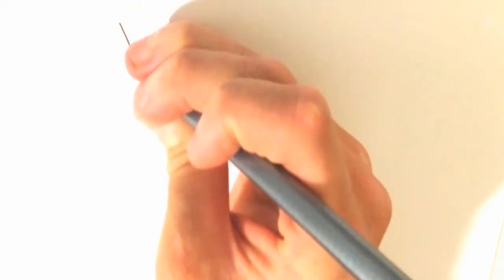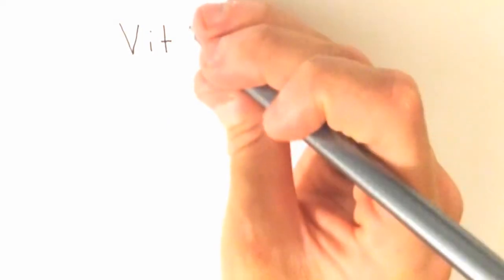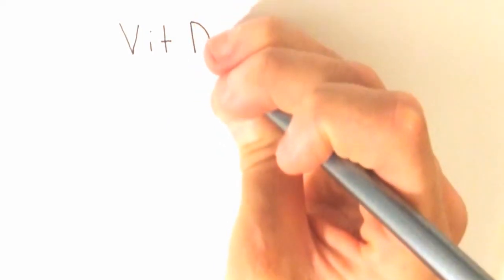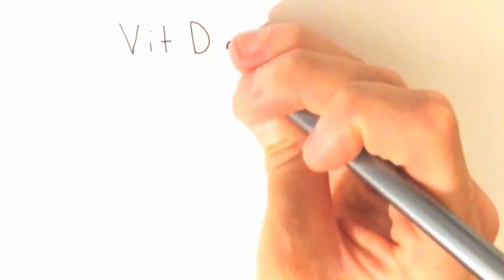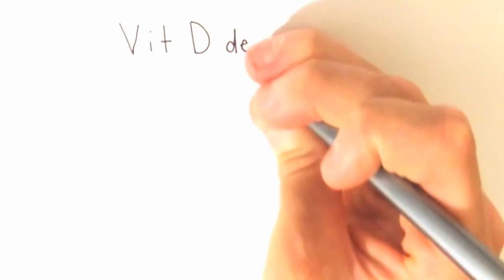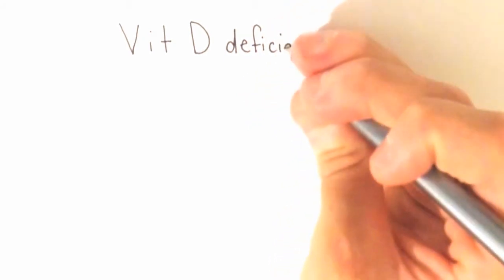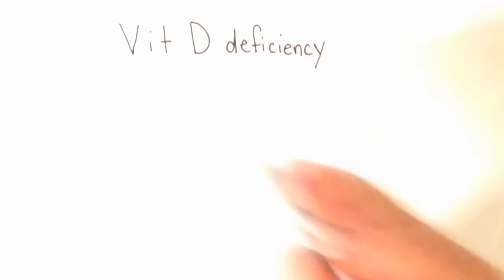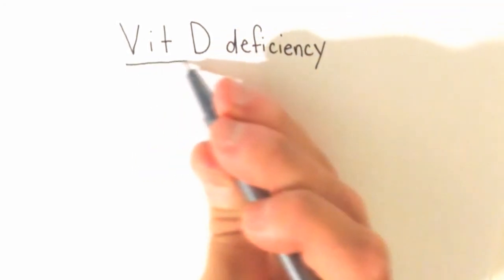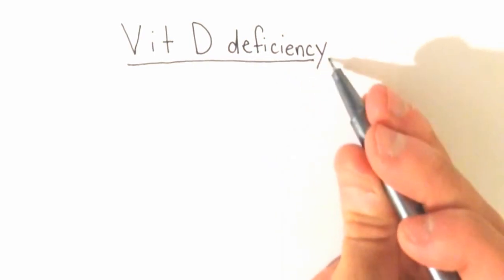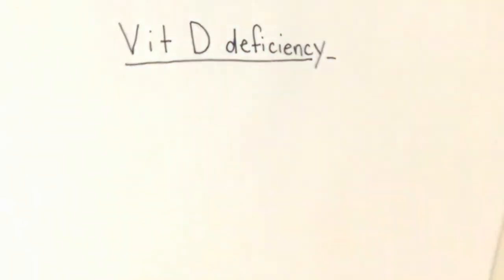So what if someone is experiencing a vitamin D deficiency? This is actually a big issue in developing countries due to poor dietary intake, and also a problem in the United States as about 100 million Americans fail to get enough sunlight. What does that tell you all that are sitting indoors watching this video? It is also important to note that those with liver and kidney failure are susceptible to vitamin D deficiencies as well.